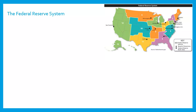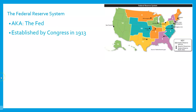You may or may not have heard of something called the Federal Reserve System — what the cool kids call the Fed. So if you ever hear that in the news, that's what they're talking about. It was established by Congress in 1913, so this is not something seen in the Constitution; it was created a little bit later. And it is our central banking system.